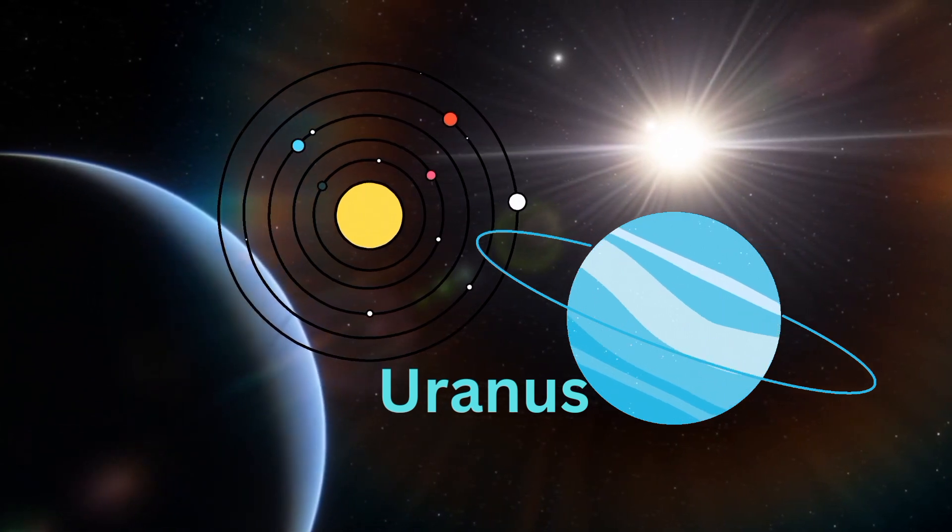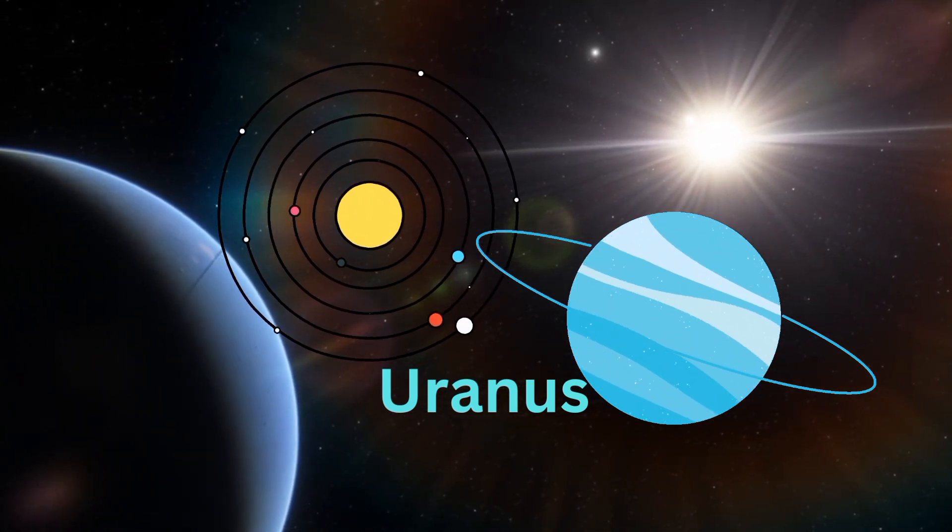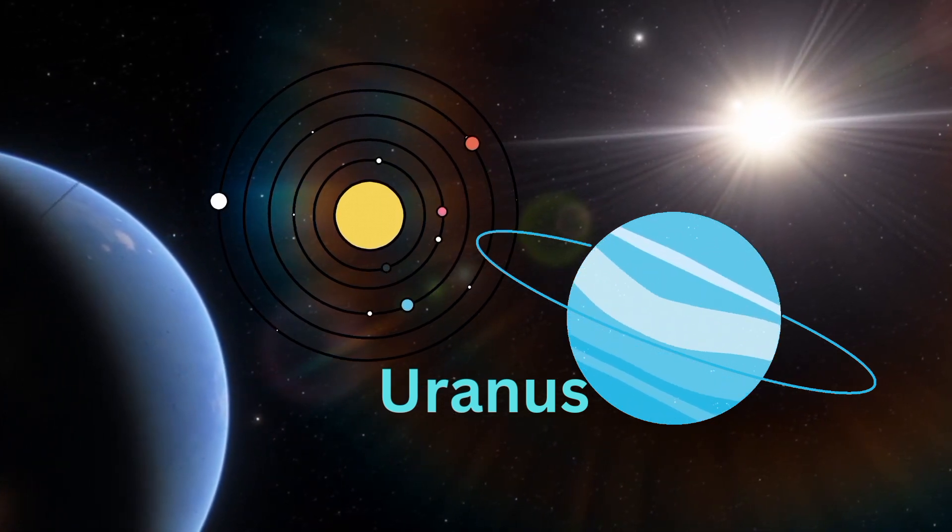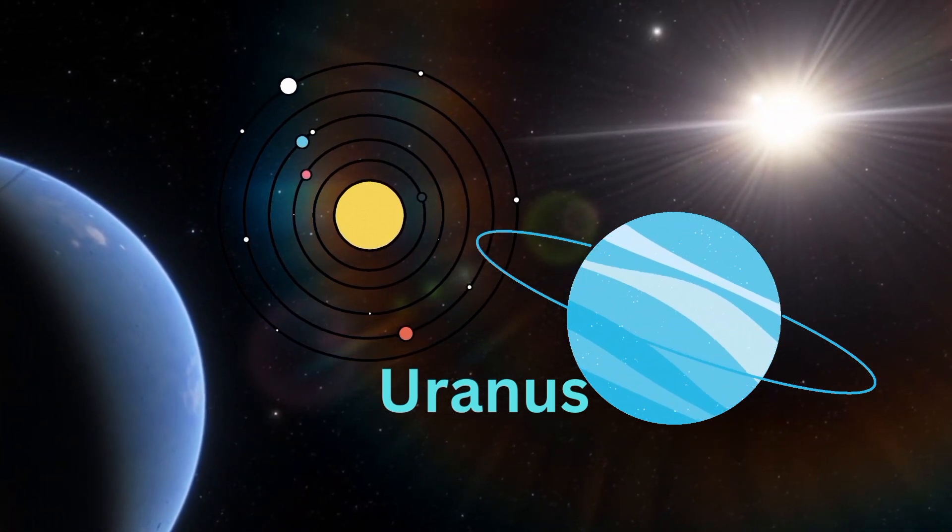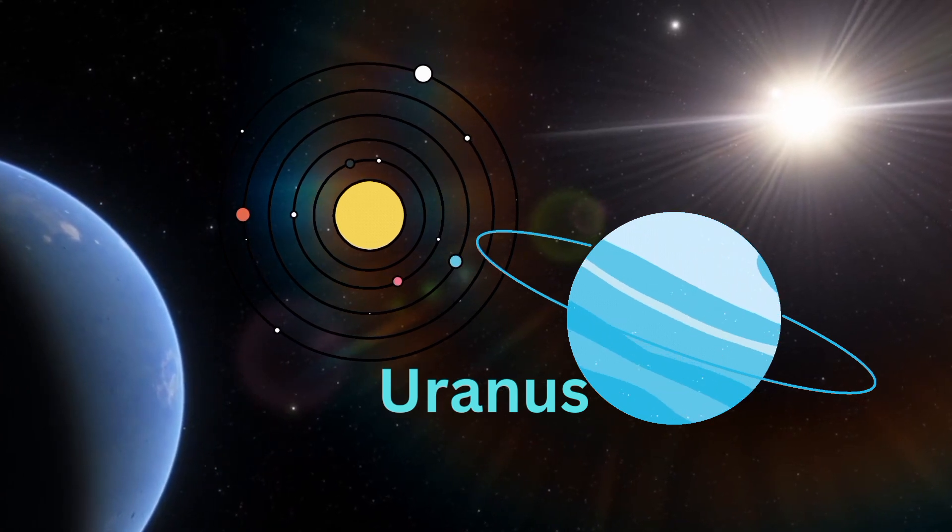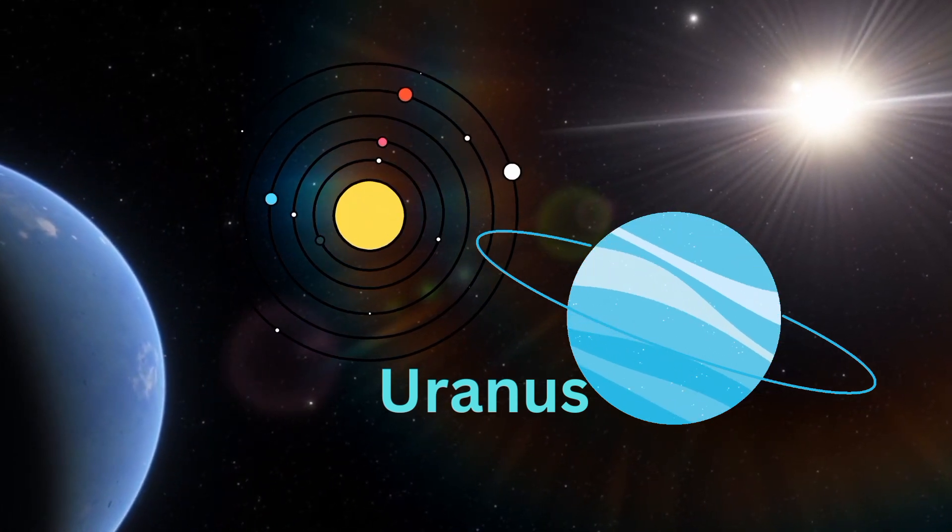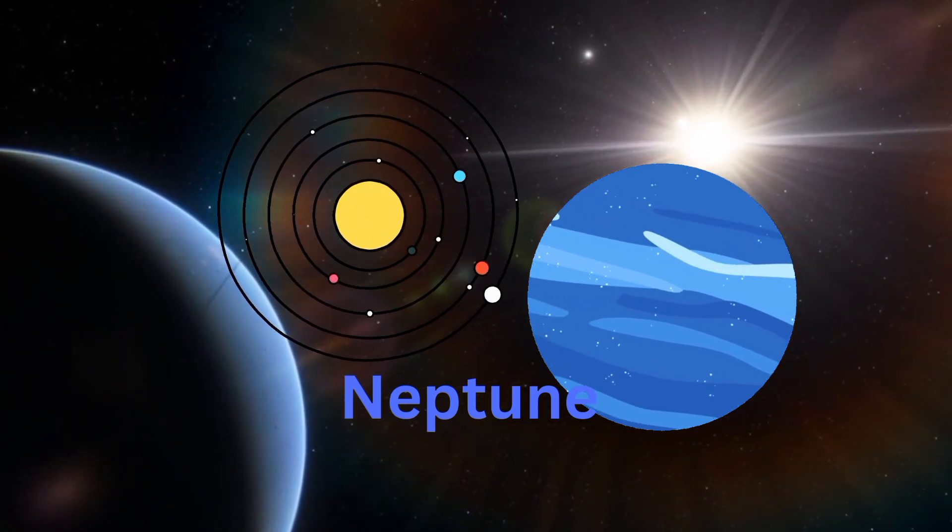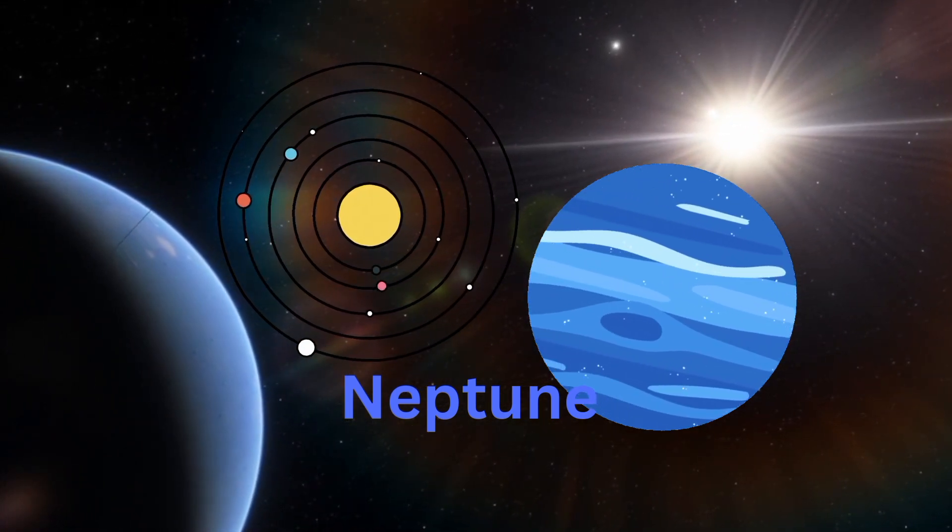My name is Uranus. I am blue in color, the seventh planet from the Sun. Humans have named me the icy planet because I am the coldest one.